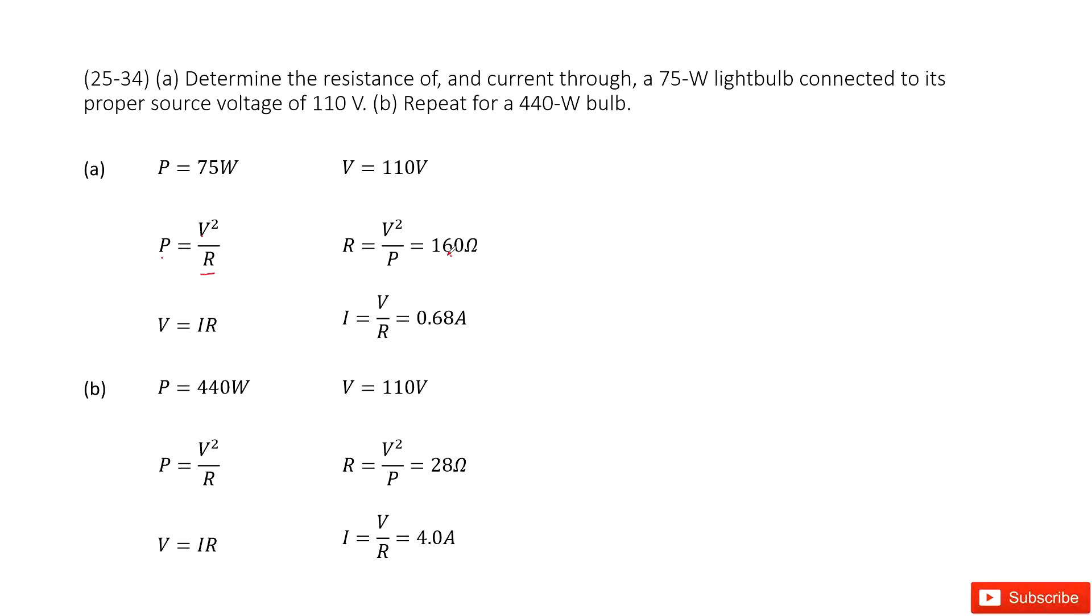Next, we find the current. So how can you get the current? The easiest way is Ohm's law. Ohm's law tells you the voltage equals the current times R.